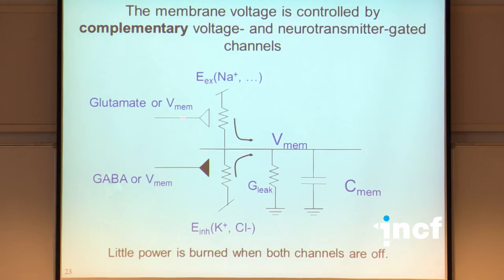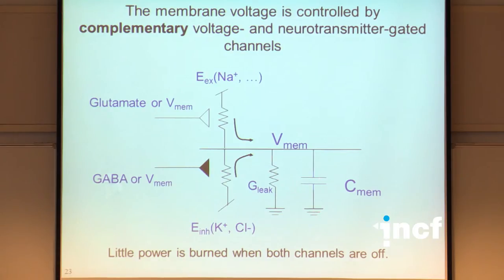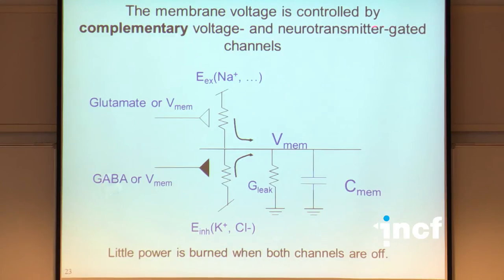Building on the previous slide: I add the leak conductance. This is equivalent to the soma, with a capacitor imitating the soma's capacitance. This demonstrates that we can imitate the complementary voltage- and neurotransmitter-gated channels seen in biology using these sub-threshold transistor circuits.